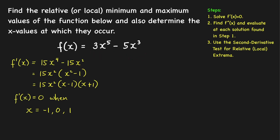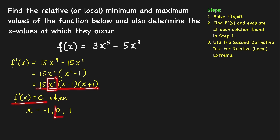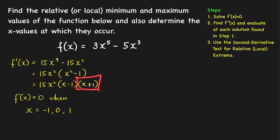We can easily find the zeros of this function by factoring. We factor out the GCF, which is 15x squared, giving us 15x squared times x squared minus 1. Since this is a difference of two squares, the factors are x minus 1 times x plus 1. So this derivative equals zero when x equals 0, x equals 1, or x equals negative 1.